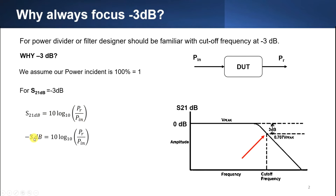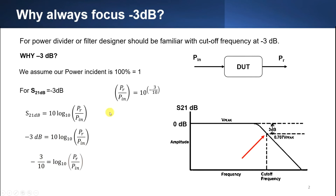For negative 3dB: negative 3 equals 10 log of power received divided by power input. We divide both sides by 10, then take 10 to the power of negative 3 divided by 10 to remove the log. Power received divided by power input equals 0.5 after calculation.